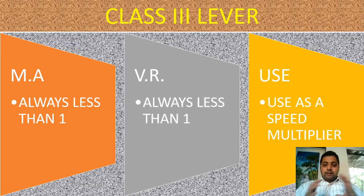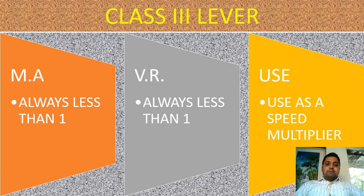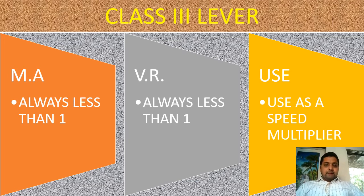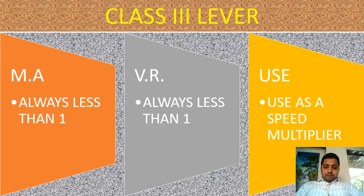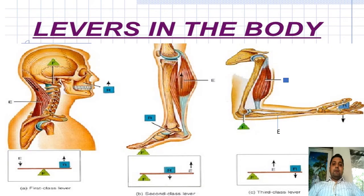Comparing all three types: Class 1 levers can have MA greater than, equal to, or less than one. Class 2 levers always have MA greater than one (force multiplier). Class 3 levers always have MA less than one (speed multiplier). Class 2 VR is always greater than one; Class 3 VR is always less than one.